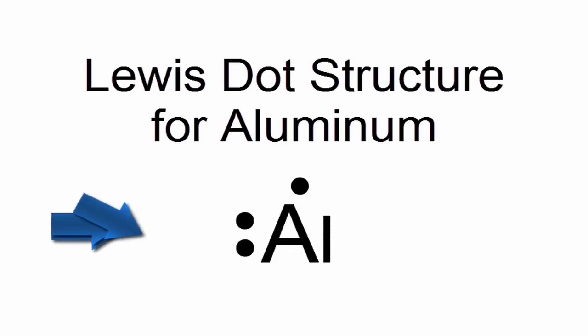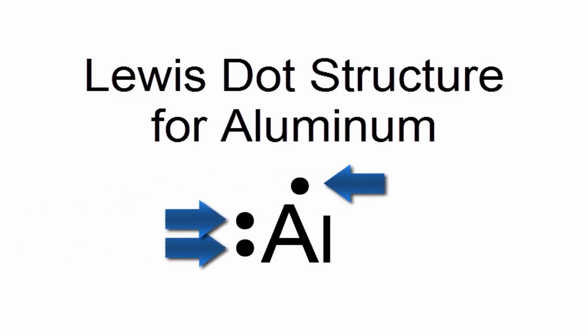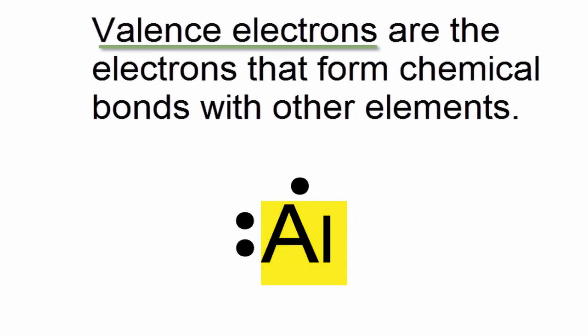Aluminum is in group 13, or 3A. That means it has three valence electrons. We'll put those valence electrons around the symbol Al for aluminum.